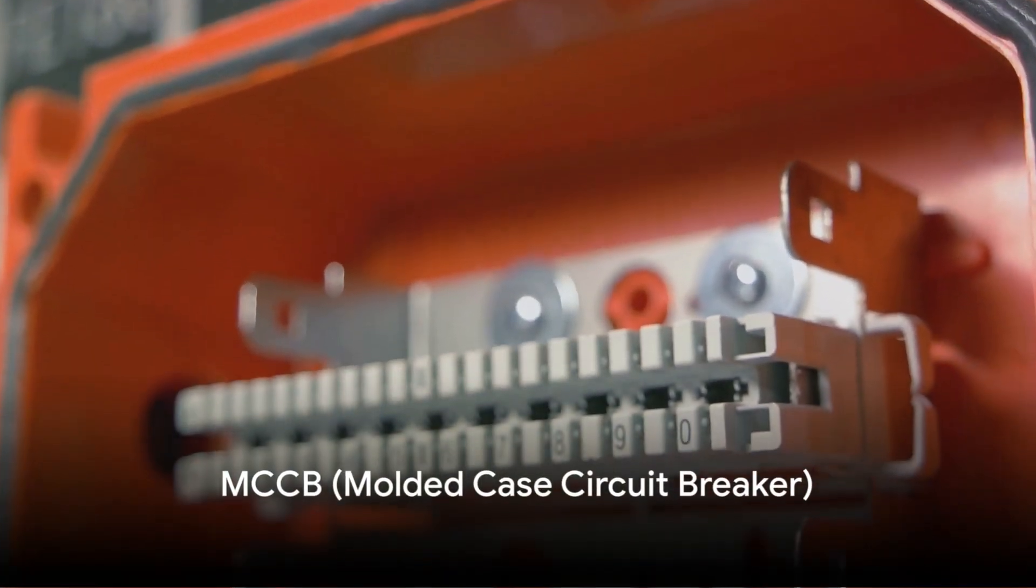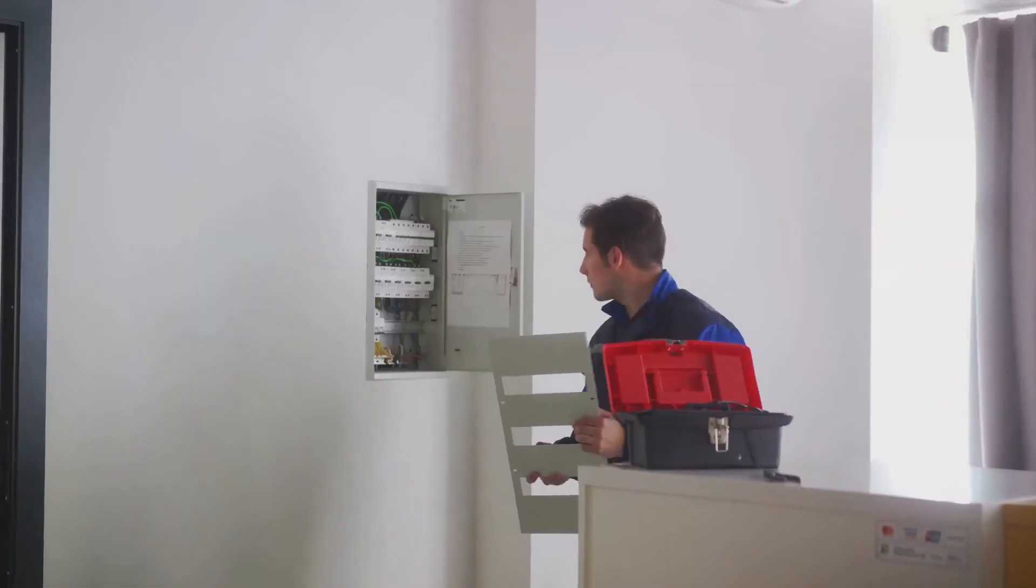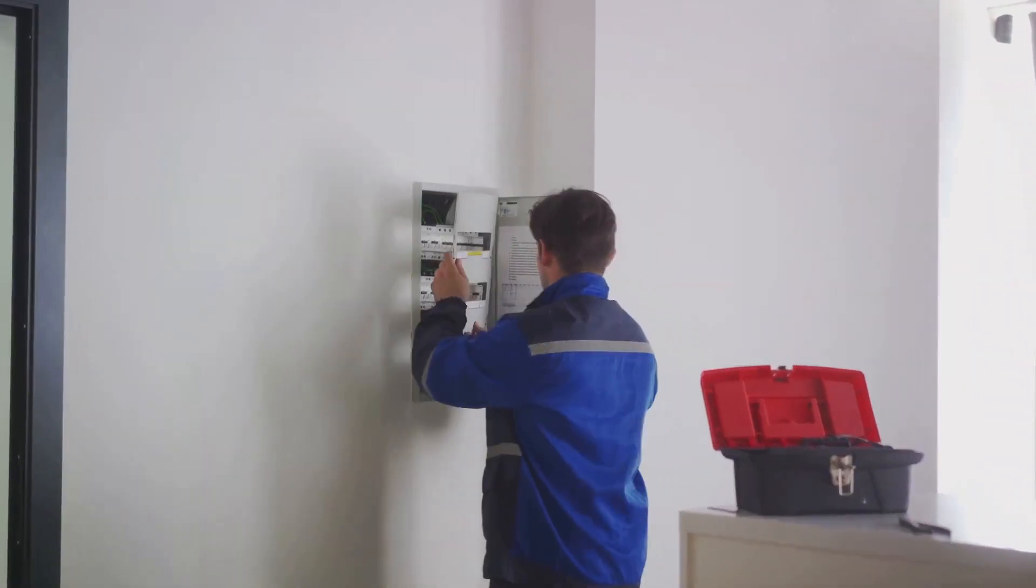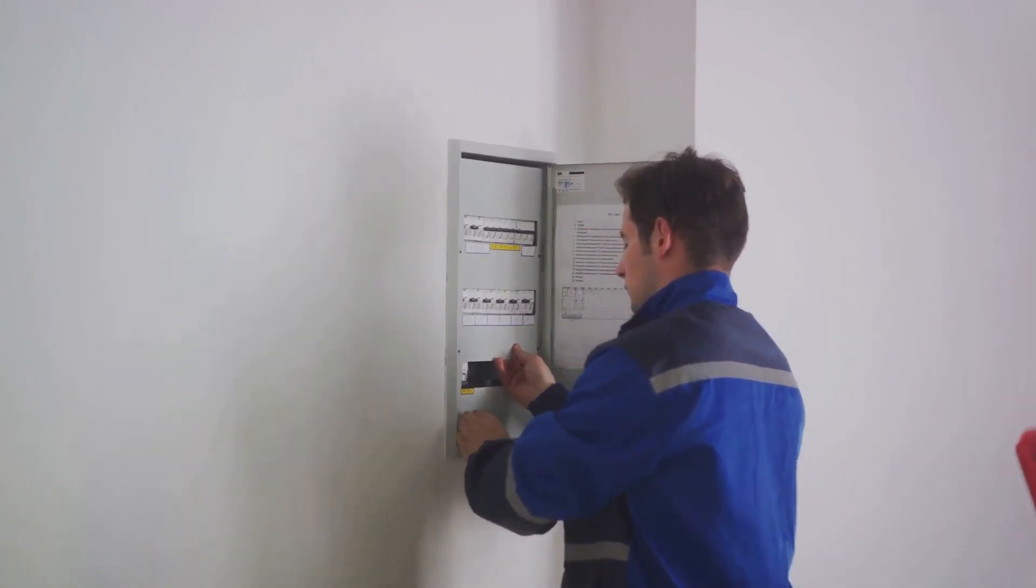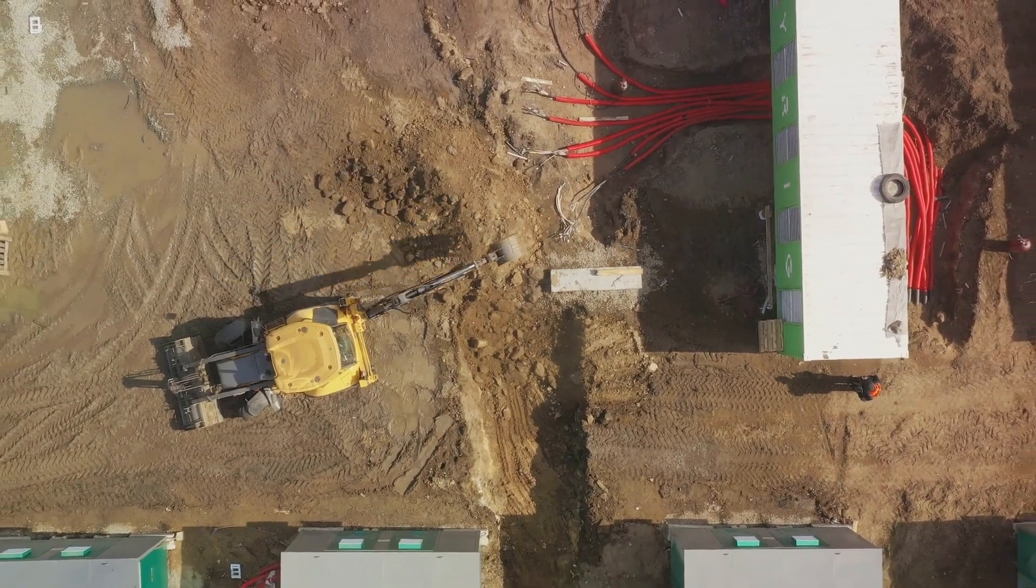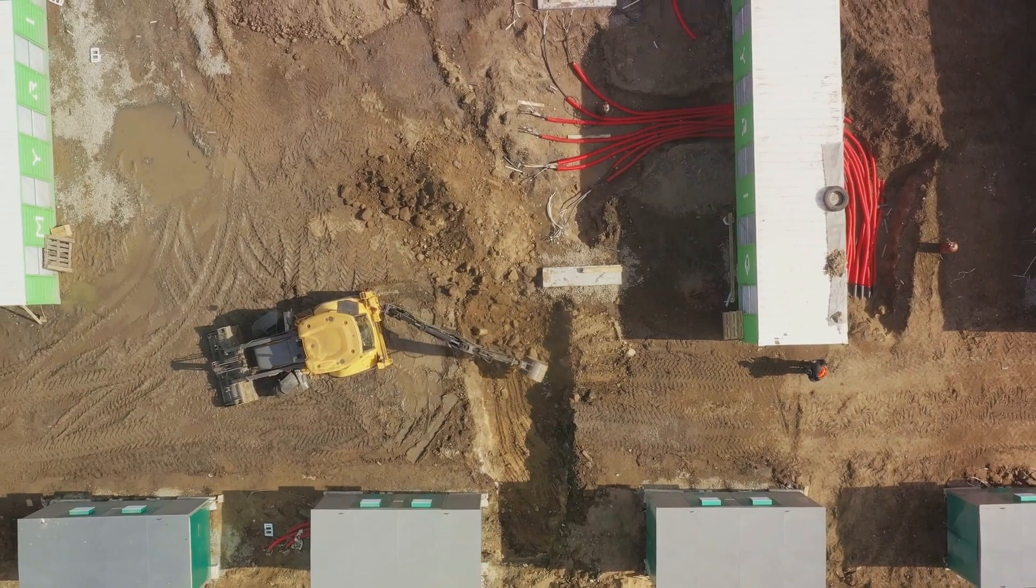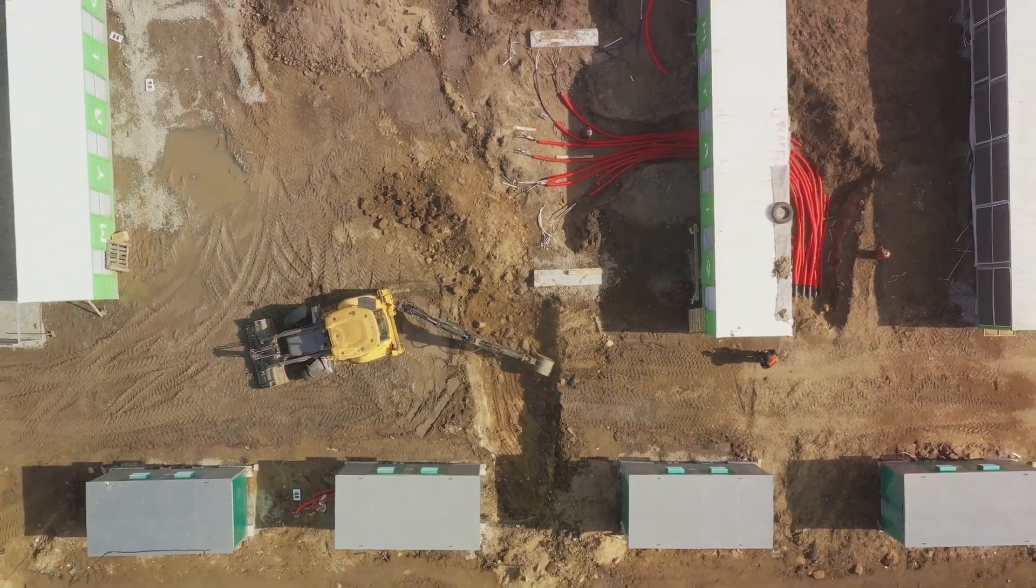Finally, we have the MCCB or Molded Case Circuit Breaker. This heavy-duty circuit breaker is designed for larger electrical systems and industrial applications. The MCCB provides protection against overcurrents, short circuits, and even higher fault currents. With its higher breaking capacities, the MCCB is equipped to handle larger electrical loads compared to MCBs.